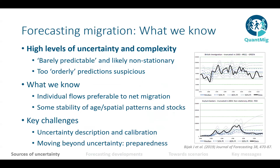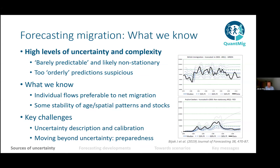Migration is the most uncertain component of population change. It is quite consequential for population forecasts, yet very uncertain, driven by so many different factors that are difficult to operationalize and capture in a coherent theoretical framework. This leads to migration processes being notorious for being barely predictable — statistically speaking, non-stationary — which renders many claims of precise predictions quite suspicious.